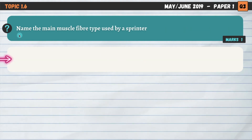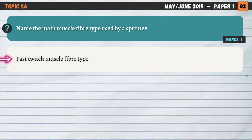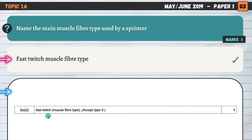Question number two, command word is name again. This one is topic 1.6 relating to muscle fibre types. Name the main muscle fibre type used by a sprinter. Since sprinting is high intensity, fairly low in duration, and requires lots of power and fast muscle contractions, we are looking at fast twitch muscle fibre type. As confirmed by the mark scheme, fast twitch, or type two, would have given you the mark.